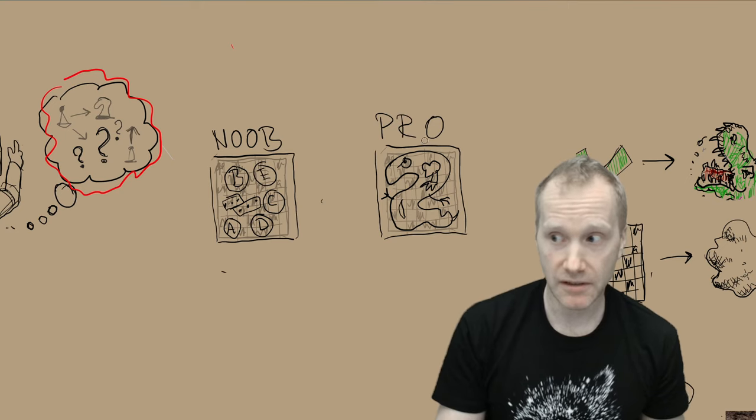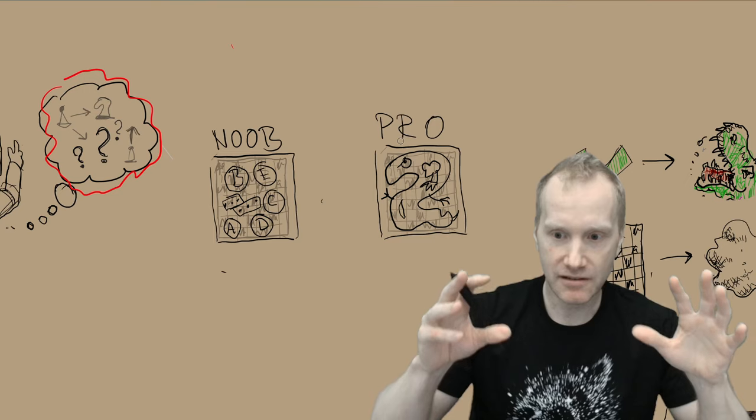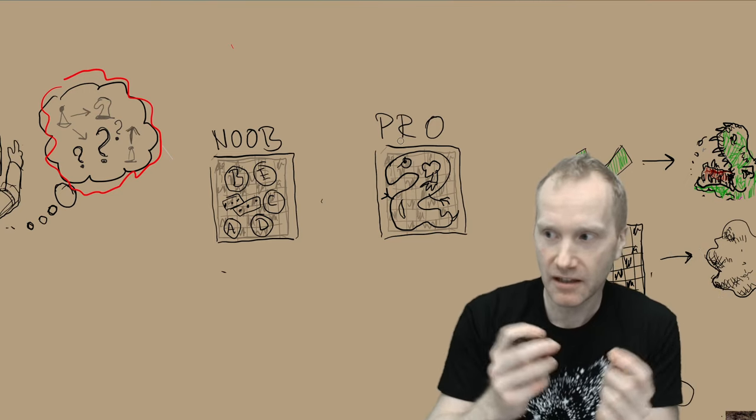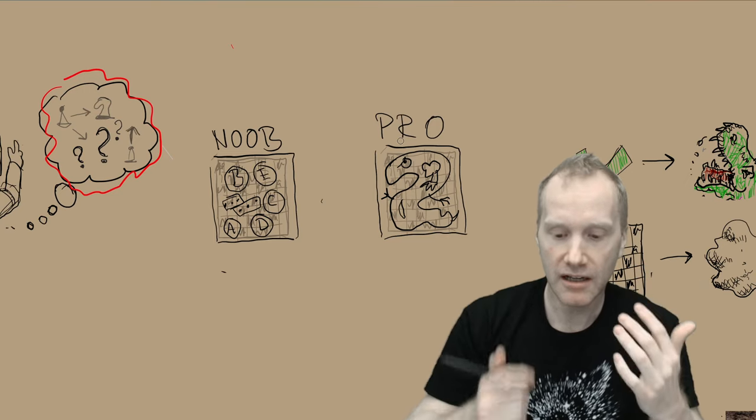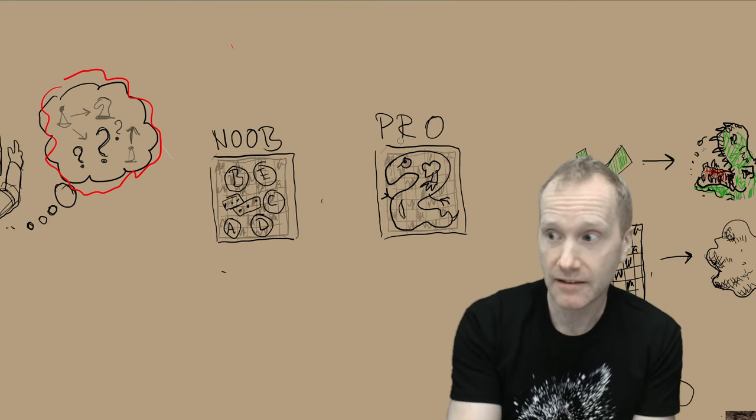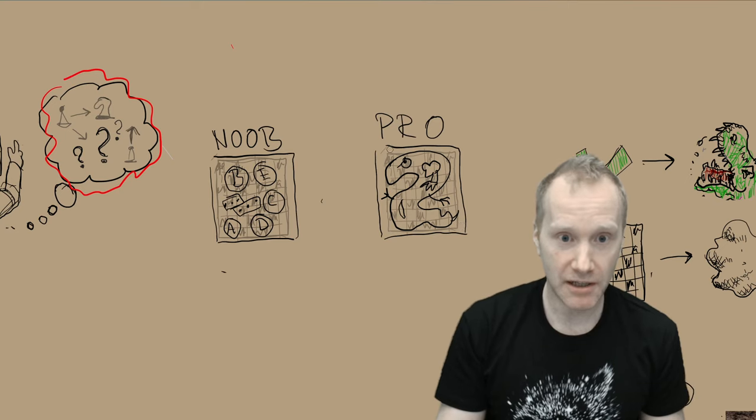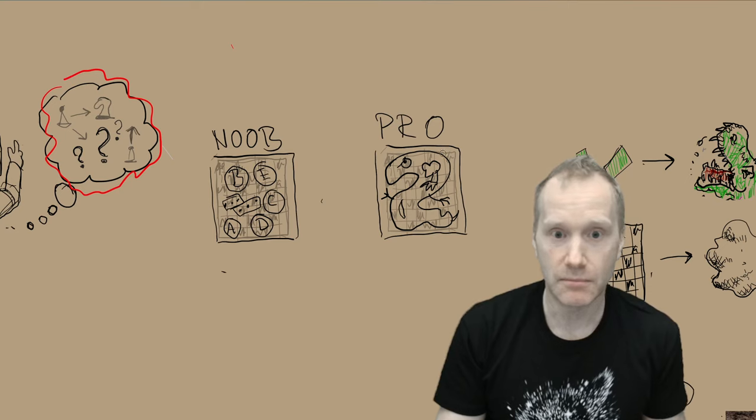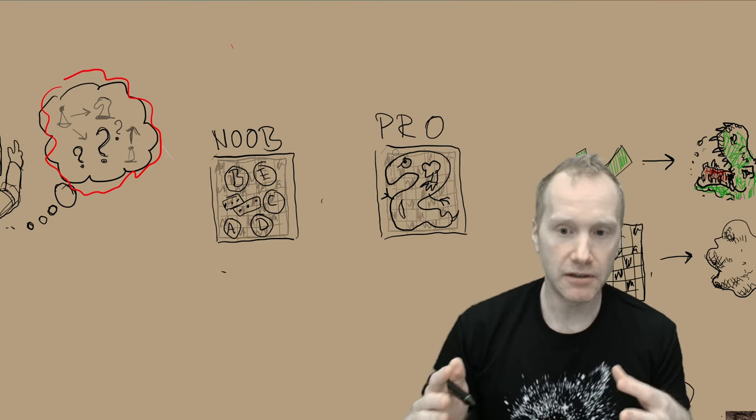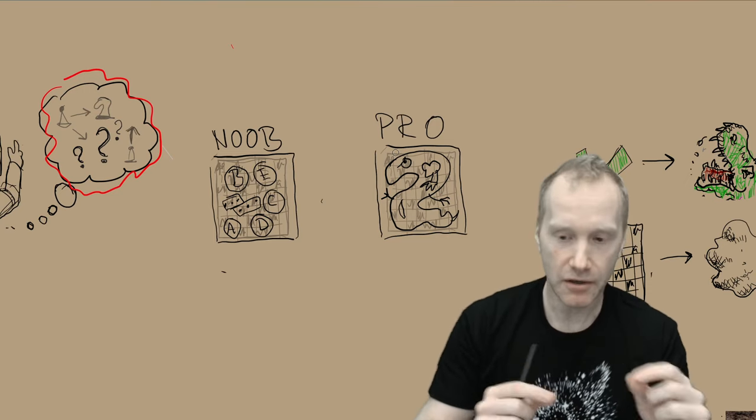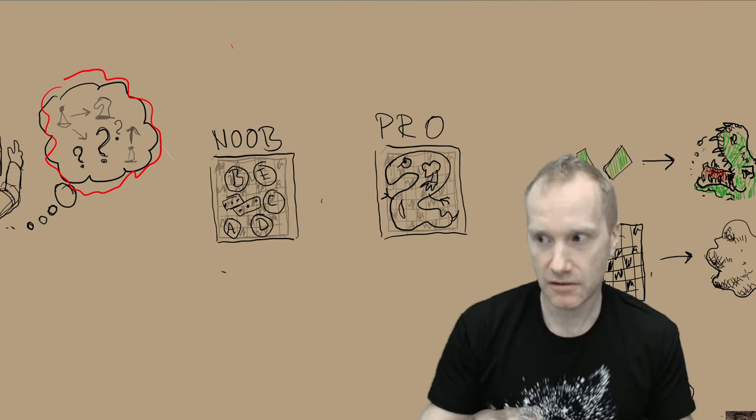But a pro doesn't think like that. A pro sees the entire configuration of chess pieces as some sort of substance. Like a certain configuration in their head conjures up an image, just like the image of my crudely drawn cat conjures up an imagery of cat in your head. The pro chess player conjures up some sort of imagery of that. And you've done experiments to show this.